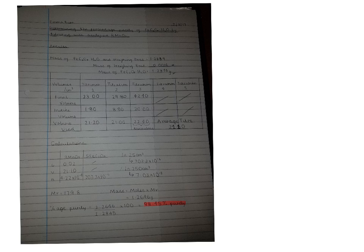So this is the actual mass of the impure solid that was transferred. The mass of the impure iron ethanedioate dihydrate in Emma's case was equal to 1.2845 grams.